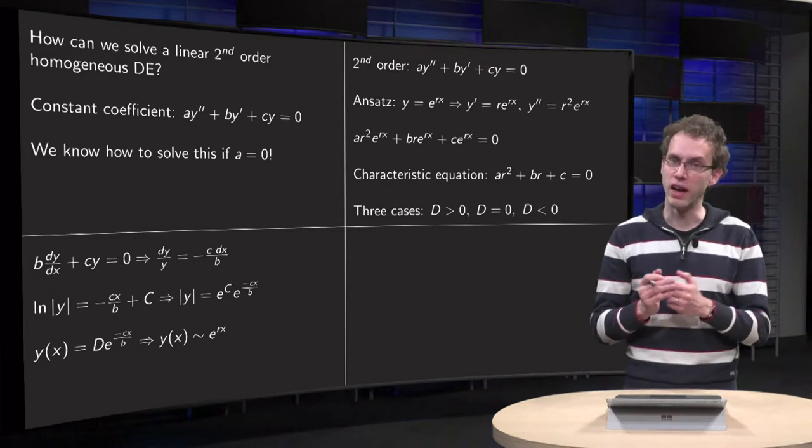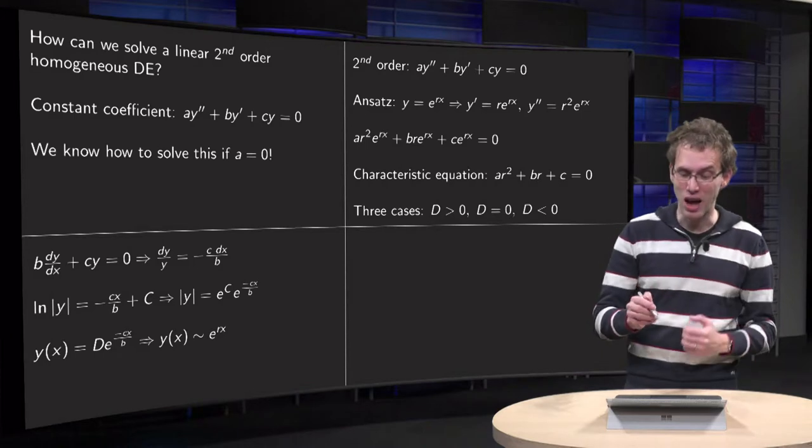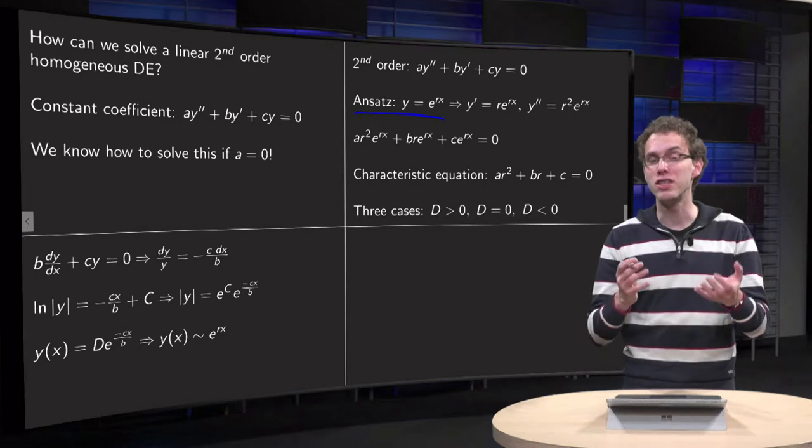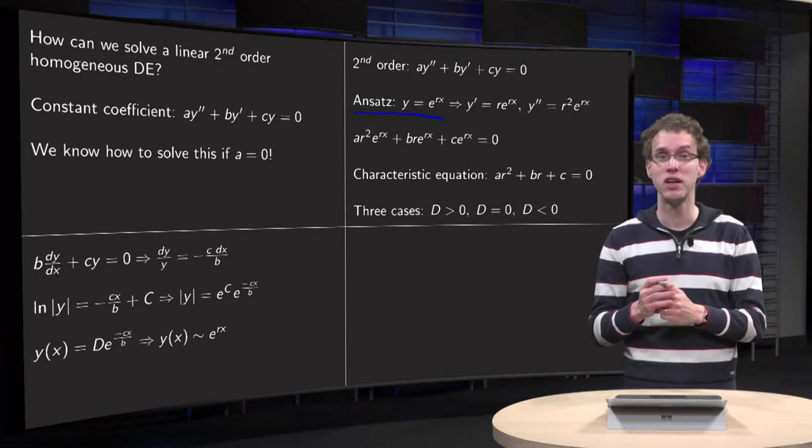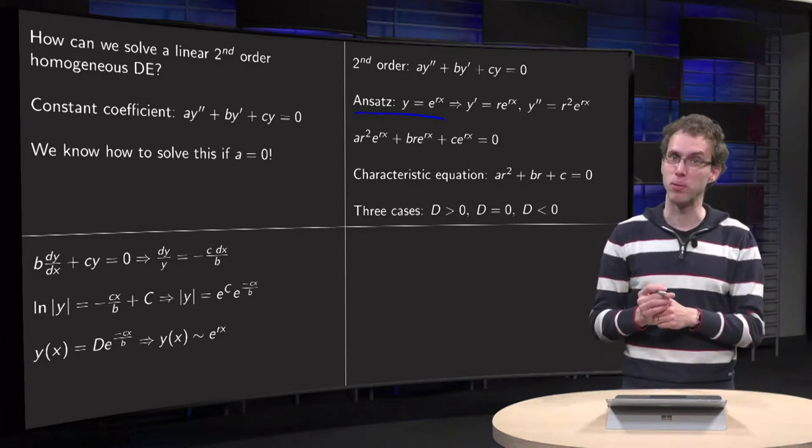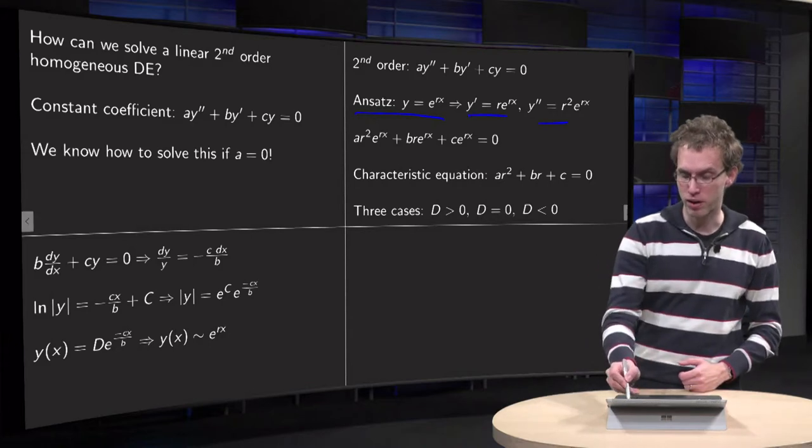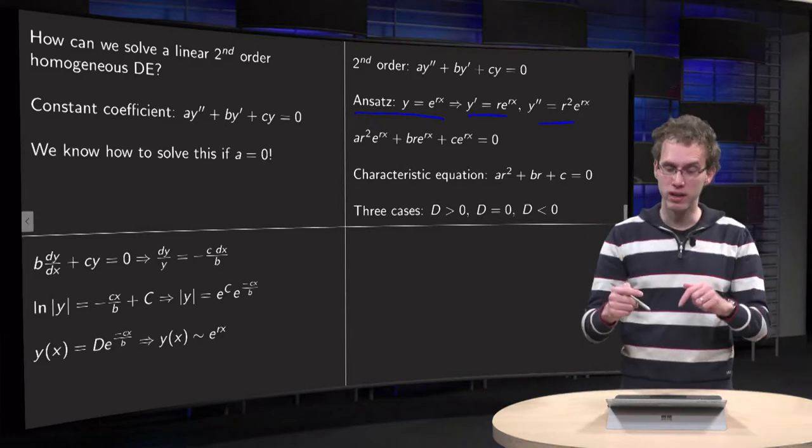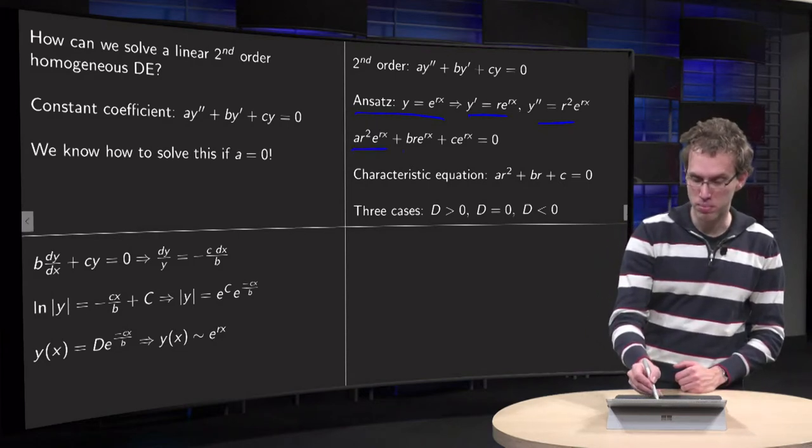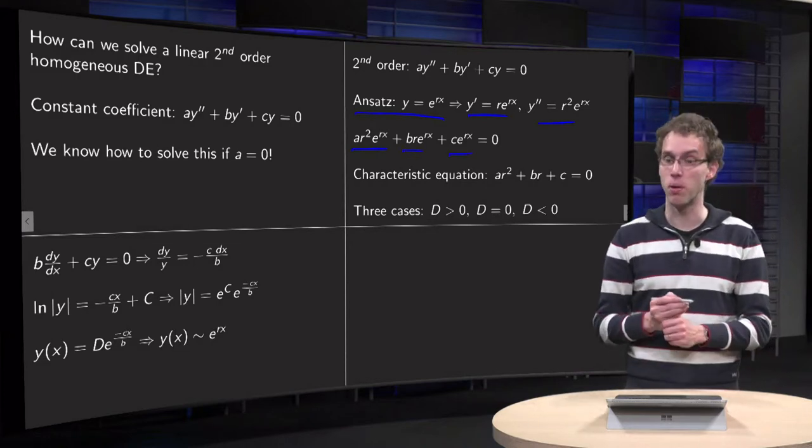In the second order case we have a*y'' plus b times y' plus c times y equals zero. And you think, well let's use this as an ansatz. Let's use this as an ansatz that the form of y is the same. So y also behaves like e to the power of rx, where we do not know r yet. We will have to find r as part of our problem. Well with this assumption, ansatz, we get y' and y'', and we plug in the ansatz back into our differential equation. So you get a times y'' plus b times y' plus c times y equals zero.